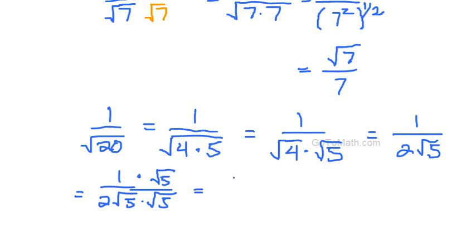So this multiplication of 1 times the square root of 5 is just the square root of 5. And then over, so the square root of 5 times the square root of 5 is 5. And therefore we end up with the square root of 5 over 10.